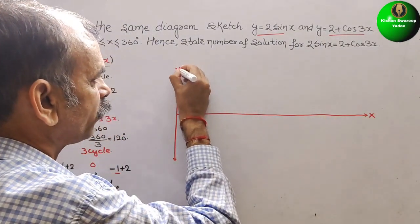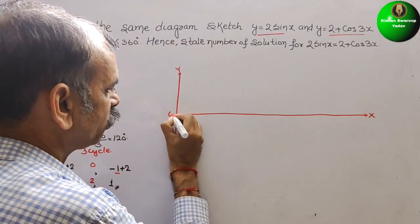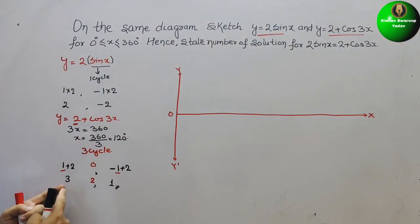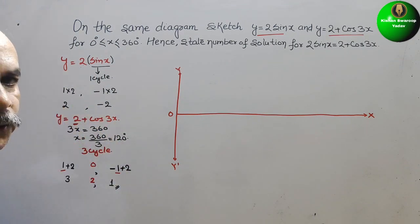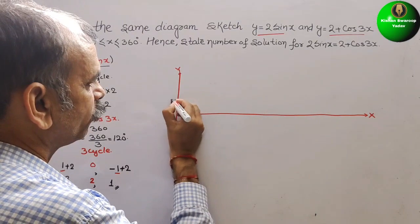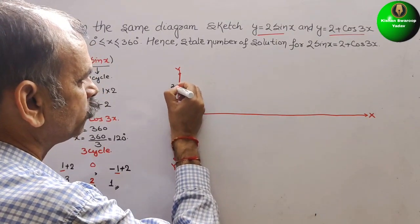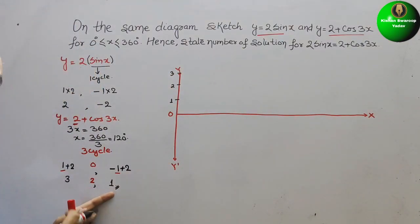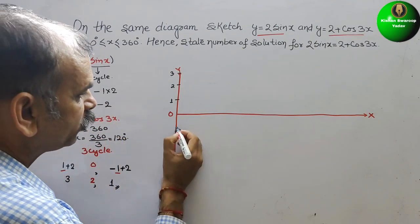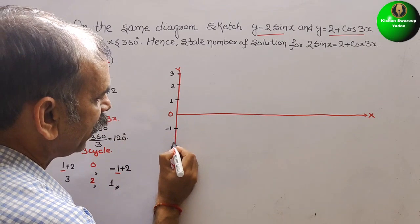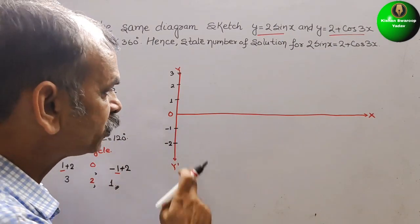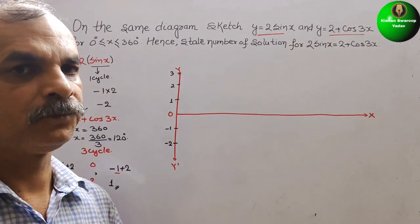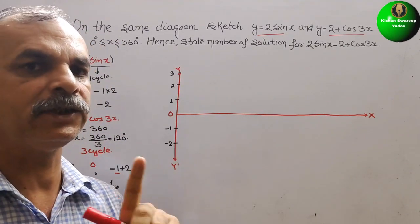The graph has an x-axis, y-axis, and origin. The amplitude markings are: maximum 3, value 2, value 1 on the positive side, and minimum 1 on the lower side, with −1 and −2 on the negative side. We divide the x-axis into four parts: 90°, 180°, 270°, and 360°.